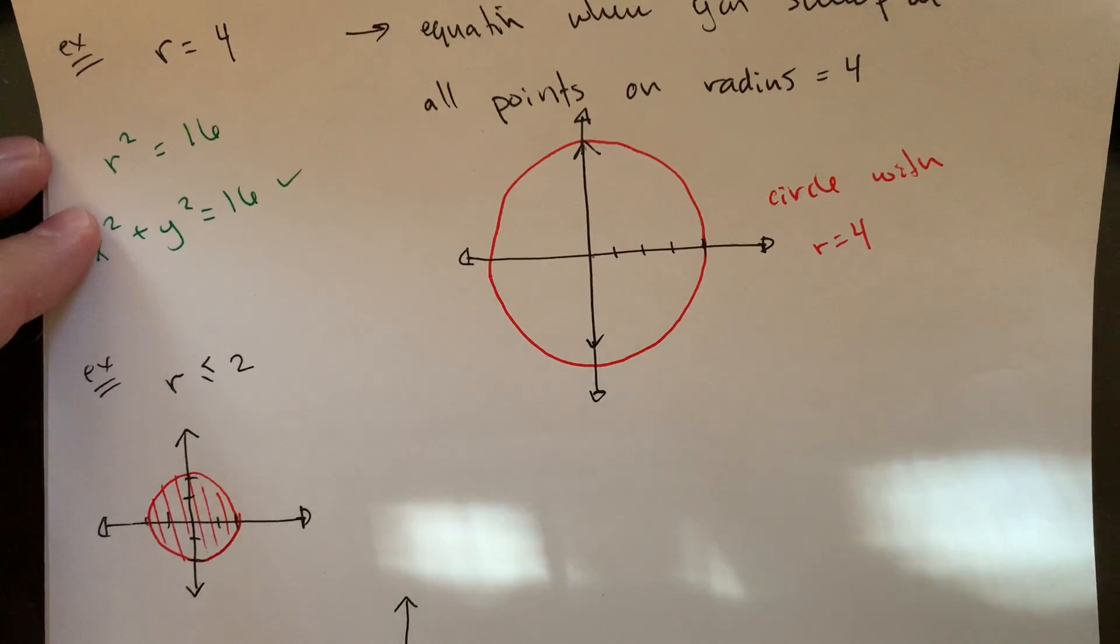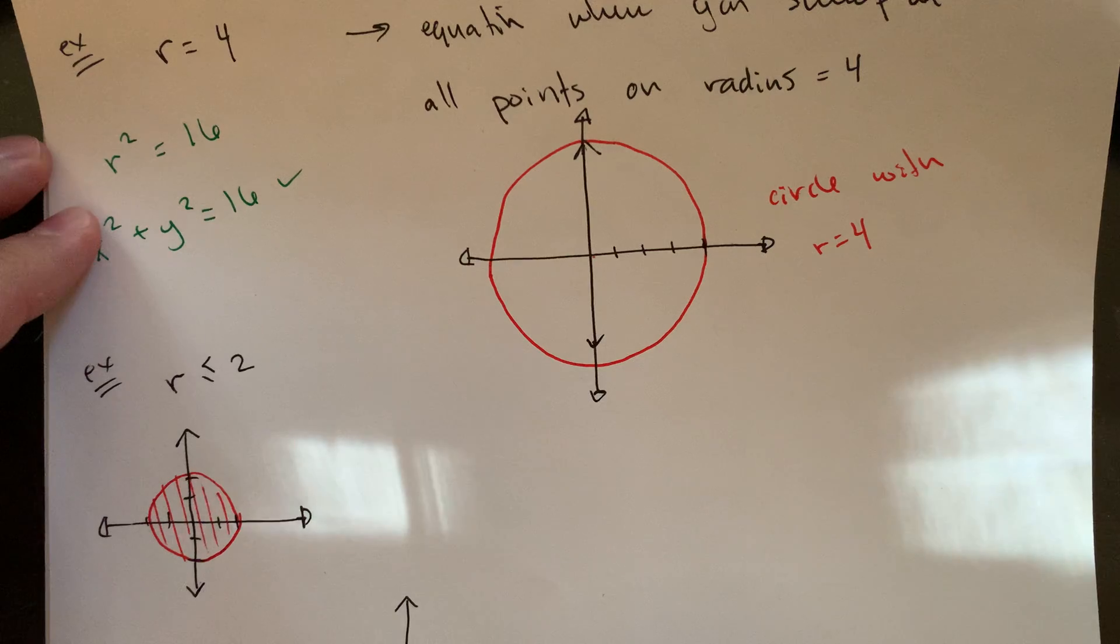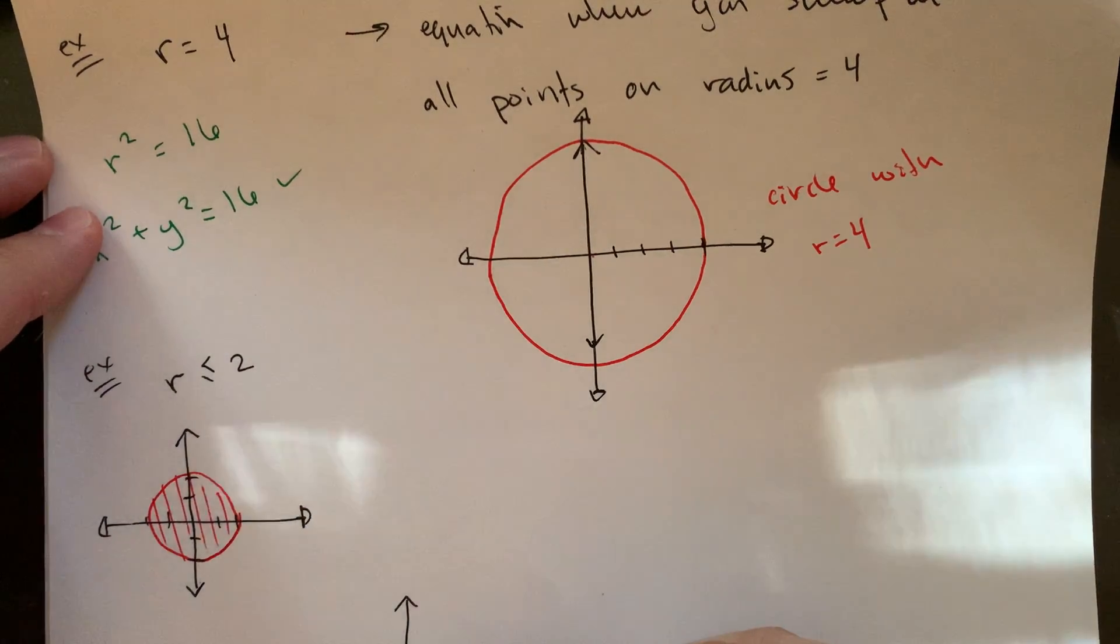One kind of change here is that we're actually doing strictly larger than. So what you would maybe end up drawing is having to use some sort of like a dotted line as your boundary, so that it's clear that you're not including the edge.